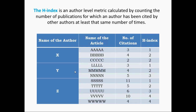In the second example, author Y published article L with 3 citations — H-index is 1. He published article M with 4 citations — H-index is 2. He published a third article with 5 citations — H-index is 3. Finally, the H-index of author Y is 3.